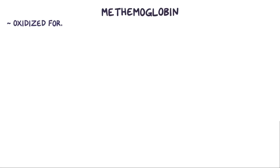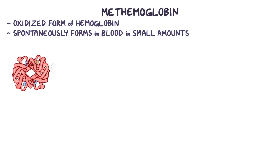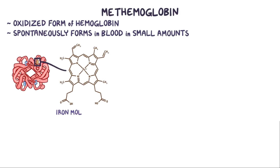Methemoglobin is an oxidized form of hemoglobin, and is normally spontaneously formed in our blood in small amounts. In methemoglobin, one of the iron molecules is in the ferric state, which means that the iron atom has lost three electrons, instead of two, to form iron 3+.